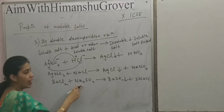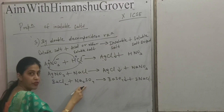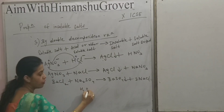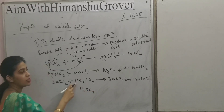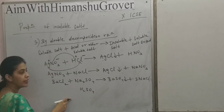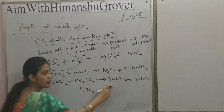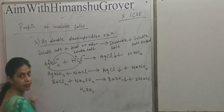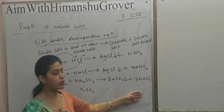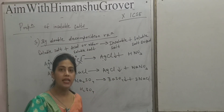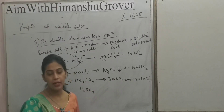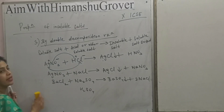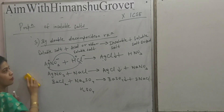If we have taken sulphuric acid, H2SO4, instead of Na2SO4, then the products formed will be BaSO4 and HCl instead of NaCl. This is also a method for preparing an insoluble salt.